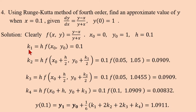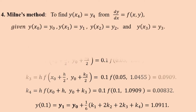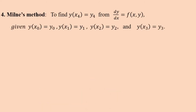So that is how to use the Runge-Kutta method to solve differential equations — we discussed four problems. Next is Milne's predictor-corrector method. Here, four initial values are given: y at x₀, y at x₁, y at x₂, and y at x₃, along with dy/dx = f(x,y). We use these to solve for y at x₄.